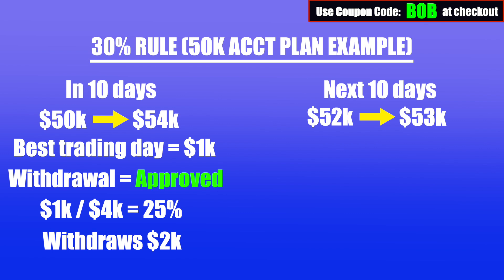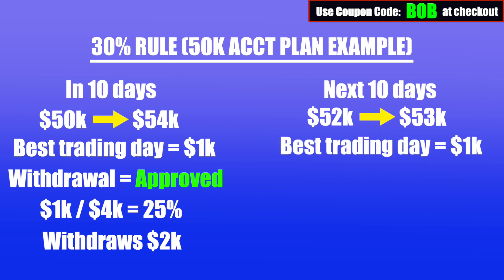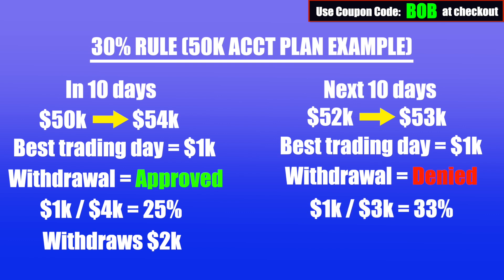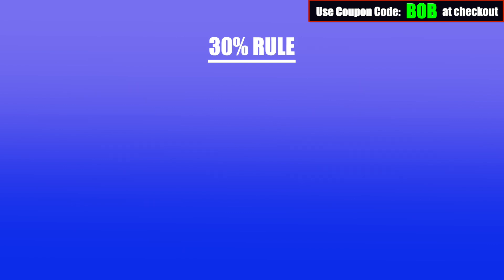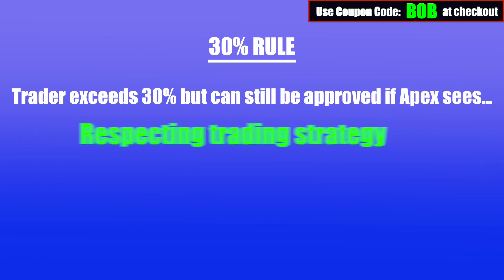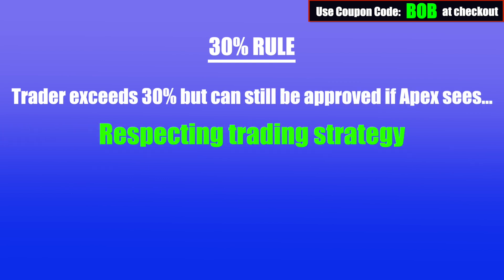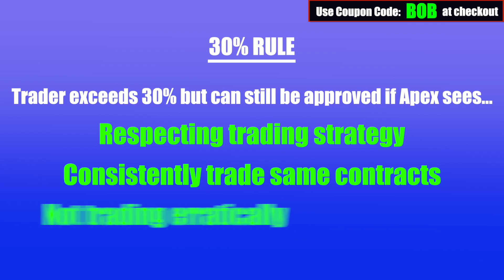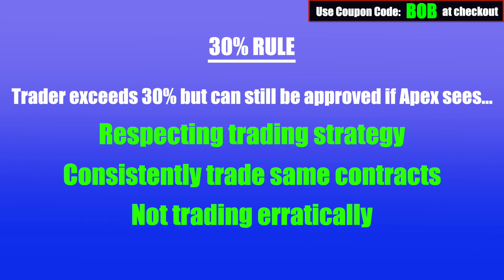So let's say in this payout cycle you had another $1,000 day as your best trading day. In this case you would exceed the 30% rule because $1,000 divided by the $3,000 current P&L is about 33%, so you would simply have to keep trading until you're within the 30% rule. However, this is not such a black-and-white rule. If you exceed 30% when making withdrawal requests but Apex sees you're respecting your trading strategy, you consistently trade around the same number of contracts, and you're not trading erratically, they can still approve your payout even though you exceeded 30%.